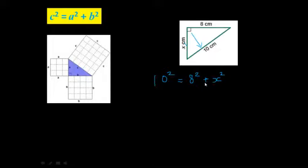So in order to get X on its own, you're going to have to subtract 8 squared from both sides. So we end up with 10 squared minus 8 squared is equal to X squared. So what we're doing is we're subtracting the square of the shorter side from the square of the hypotenuse.